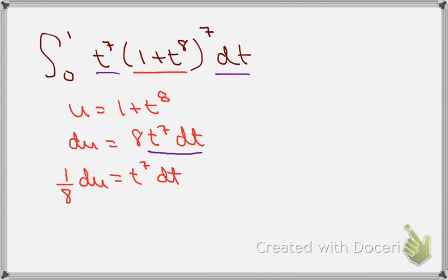I started by noticing that this was a composite function, which I have underlined in the integrand—the 1 plus t to the eighth being raised to the seventh power. I made my u-substitution and I have my du.